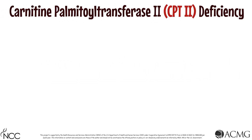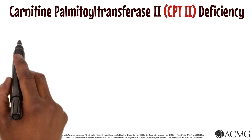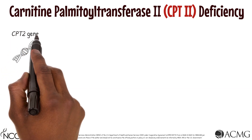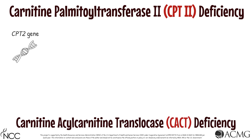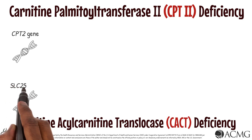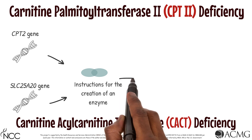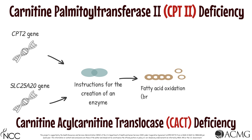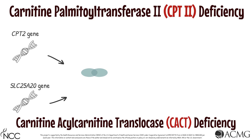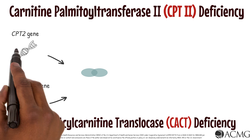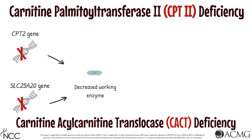CPT2 deficiency is a genetic condition caused by pathogenic variants found in the CPT2 gene. CACT deficiency is a related condition caused by pathogenic variants found in the SLC25A20 gene. These genes provide instructions for the creation of an enzyme that assists in fatty acid oxidation, or the breakdown of fats into energy. Individuals with CPT2 or CACT deficiency have decreased amounts of working enzymes, which results in decreased fat metabolism.